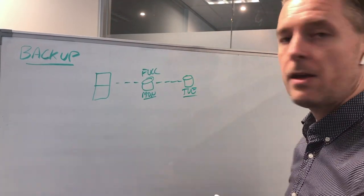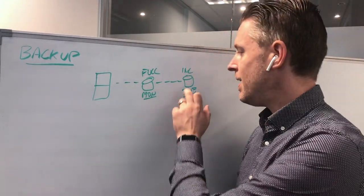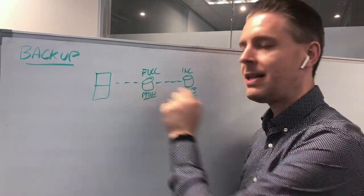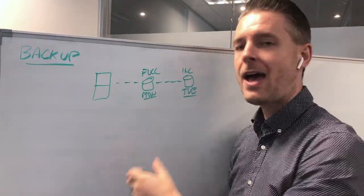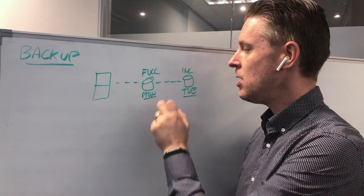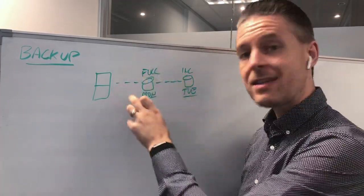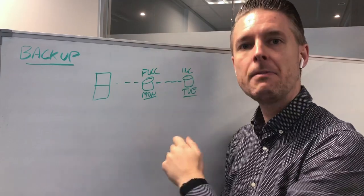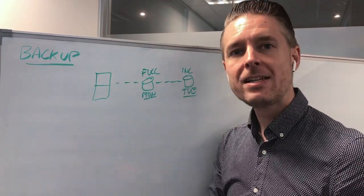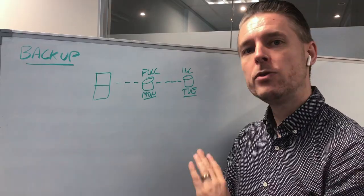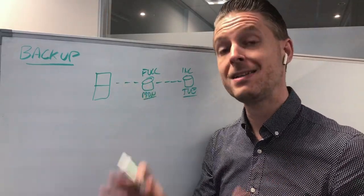The next backup, scheduled for Tuesday, is going to be an incremental. An incremental backup covers all of the changes made since the last full backup. This server has had new files added on Tuesday, so the full backup will be checked against the incremental backup, and any files that have been added or edited will then be backed up.